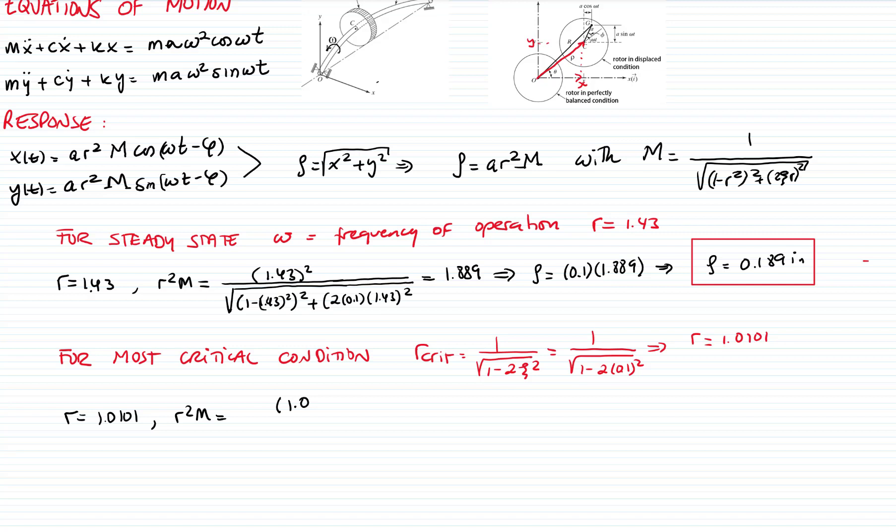But in any case, I will use this number. And when I plug in this number into my r² M value equation, that gives me a value of r² times the magnification factor of 5.025, which gives me a deflection in the most critical condition of 0.503 inches.